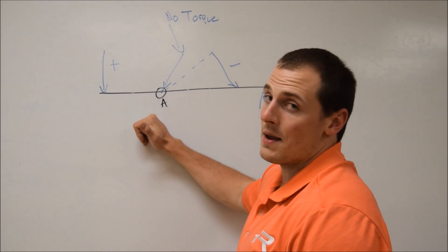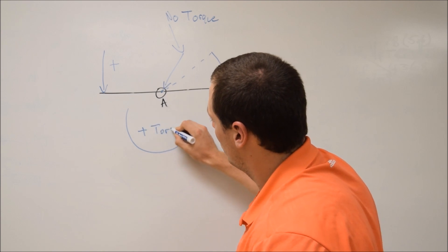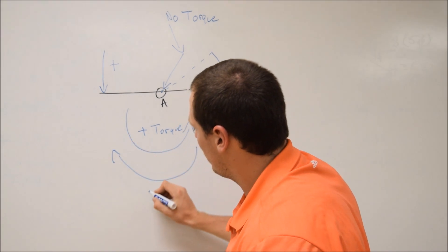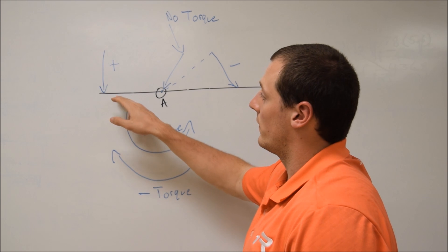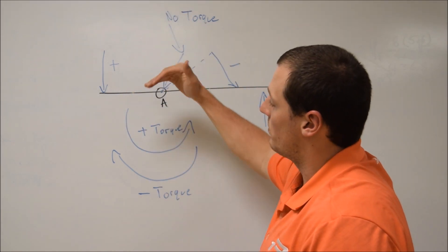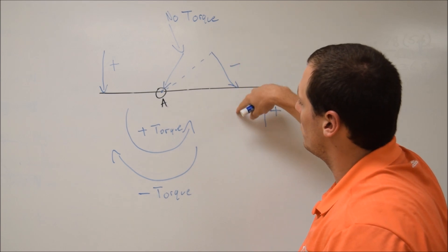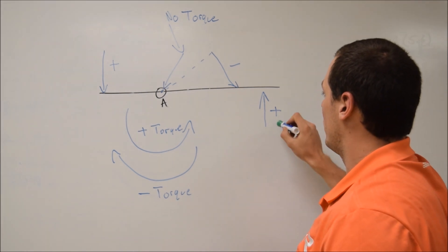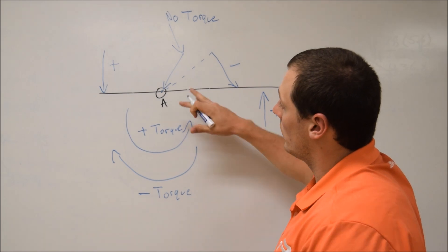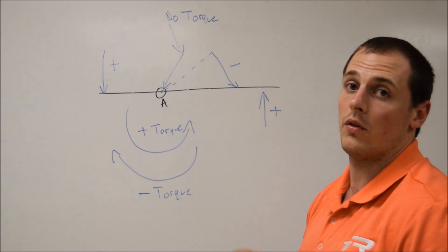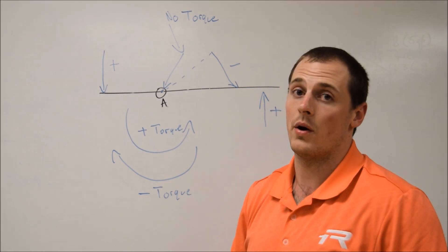When you curl your fingers in, that gives a positive torque. Any counterclockwise rotation gives a positive torque; conversely, any clockwise rotation gives a negative torque. So the force pushing the plane counterclockwise is a positive torque, the force tending to push it clockwise is a negative torque, and this other force pushing counterclockwise is also positive. Remember: any force applied directly on the axis of rotation has no torque component — that's really important.